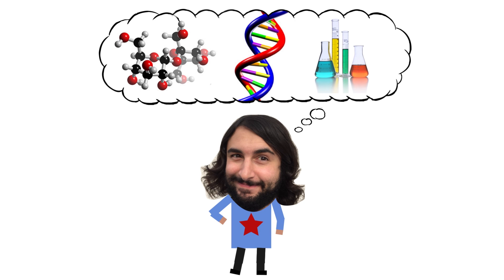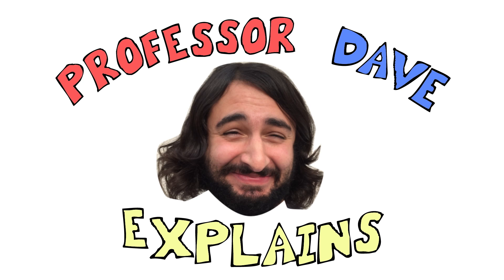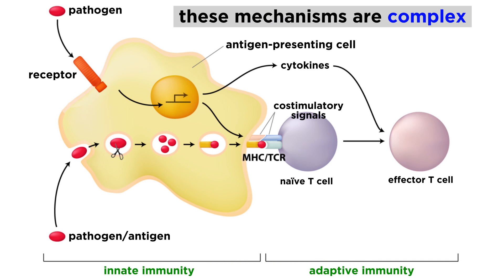Professor Dave Explains. We now have a general sense of the types of immune cells that exist, as well as their functions. But the much trickier thing to understand is precisely how these functions are elicited on the molecular level.